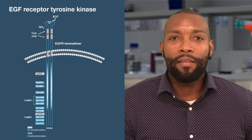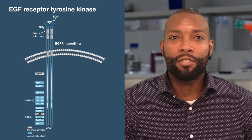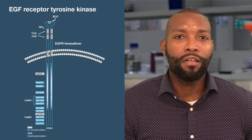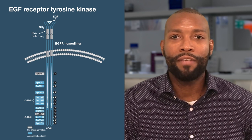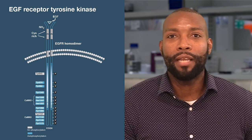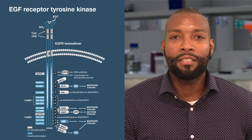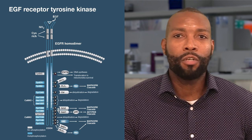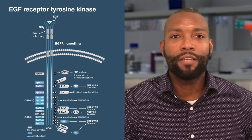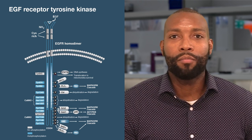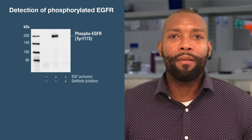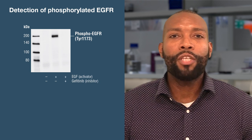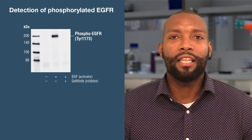Many of the experimental design principles can be applied beyond Western blot as well. As an example, consider the EGF receptor tyrosine kinase, EGFR, which autophosphorylates and activates itself after EGF ligand binding and can activate multiple downstream pathways. To investigate which specific sites on your target are phosphorylated, select a phosphospecific antibody validated for Western blot. This blot shows an antibody that detects EGFR only when phosphorylated at tyrosine 1173.